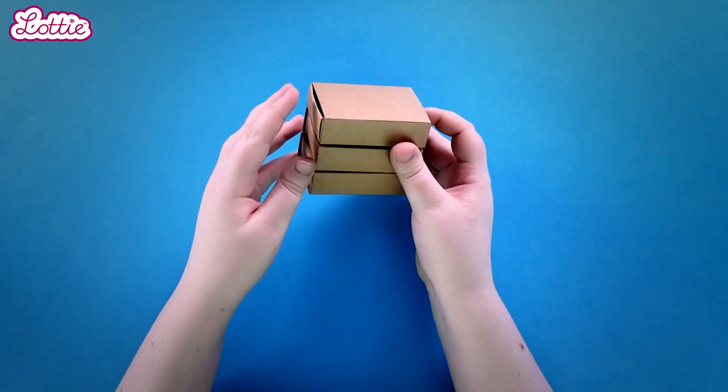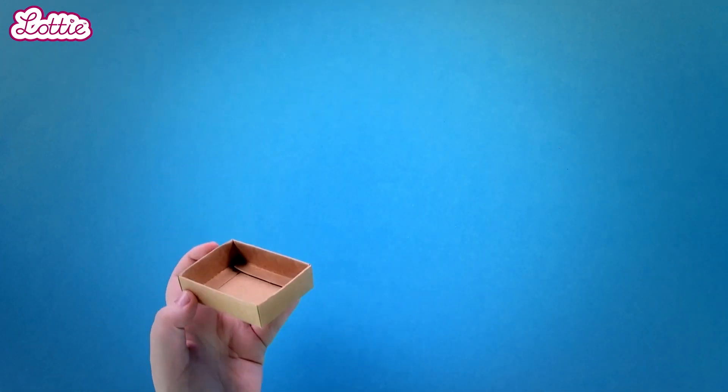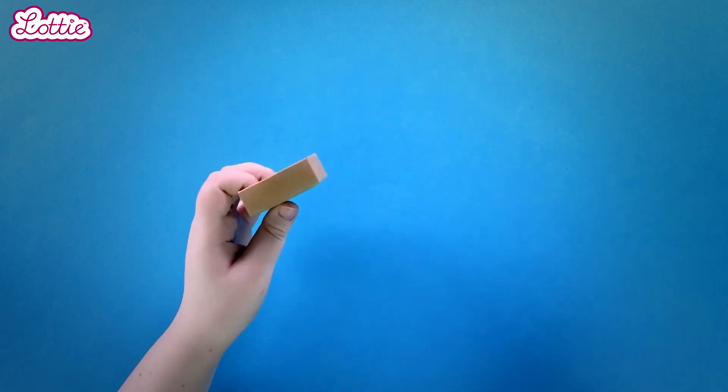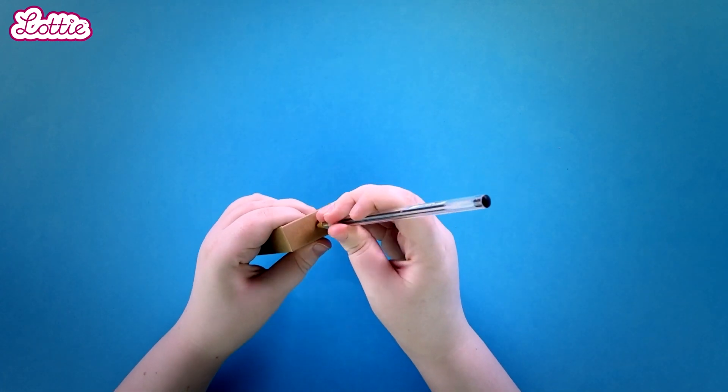Back to our drawers. Drawers need handles, so let's add some. Grab a pen and scribble on a point until it makes a hole. An adult can help if you're finding it a bit tough.